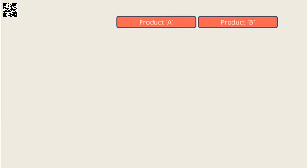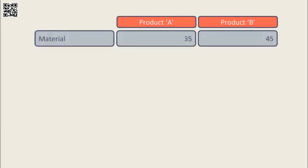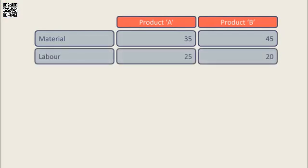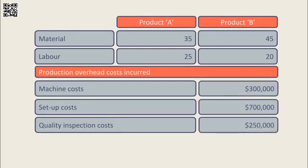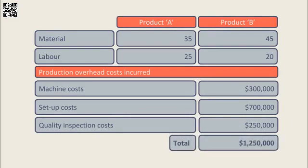Let's apply these steps to a comprehensive example. Costing Company produces two products, Product A and Product B. The direct material costs are $35 for Product A and $45 for Product B; the direct labour costs are $25 for Product A and $20 for Product B. The production overheads are broken into three cost pools: machine costs, setup costs, and quality inspection costs. The total overheads for each cost pool are $300,000, $700,000, and $250,000 respectively, amounting to $1.25 million in total production overhead.